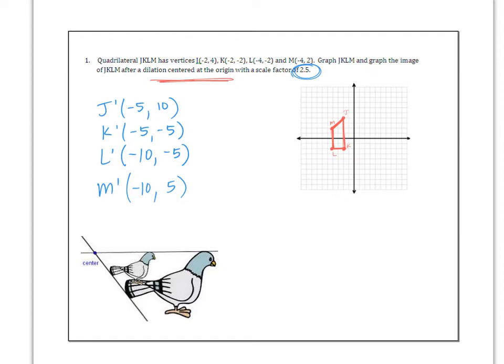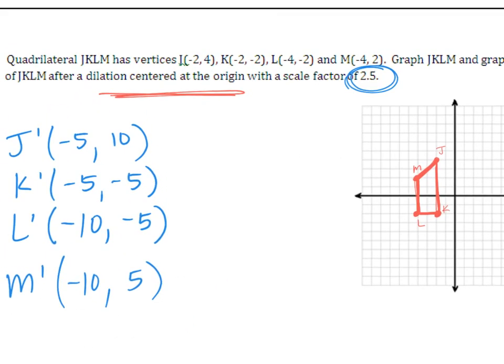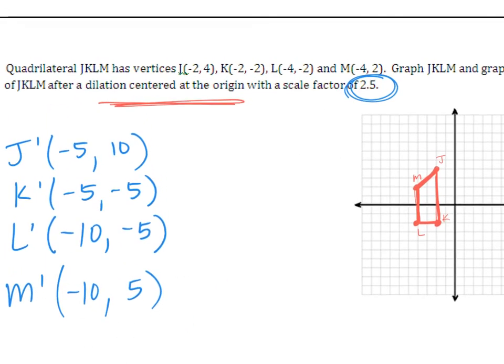All right, let's plot our new points. I'm just going to enlarge this a little bit so I can see it better. So -5, 10 is way up here. Here's J prime. And -5, -5 is down here. There's K prime. And L prime is at -10, -5. So that's about here. And -10, positive 5. Here's M prime.